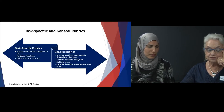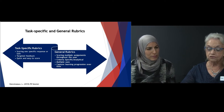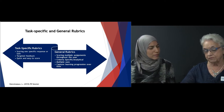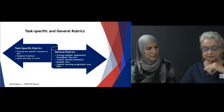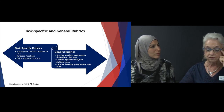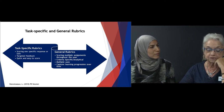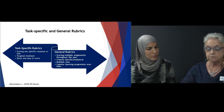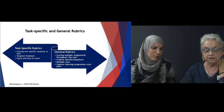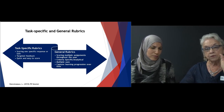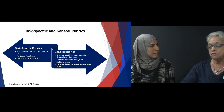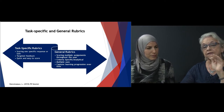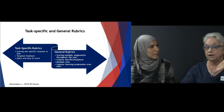Now we'll look at the differences. We've been talking about general rubrics — multiple assignments, multiple proficiency levels, multiple uses. The task-specific rubrics, or single point rubric, looks at simply one component and provides the student the opportunity to offer their reflections, and then gives the instructor the opportunity to provide feedback on those.